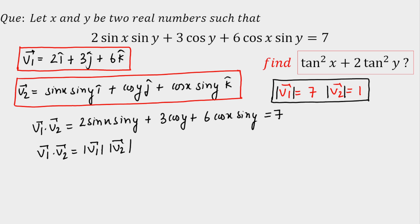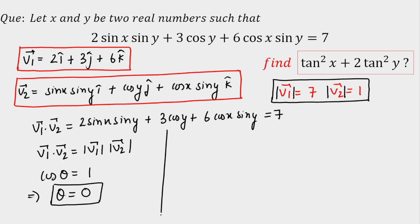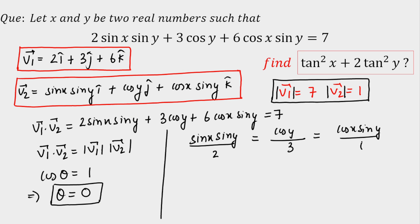If the dot product equals the product of the magnitudes, then cos θ = 1, which implies θ = 0. This means the angle between the two vectors is 0 degrees, so the vectors are parallel. Since θ = 0, I can compare the coefficients: sin(x)sin(y)/2 = cos(y)/3 = cos(x)sin(y)/6. All three ratios are equal by proportionality.